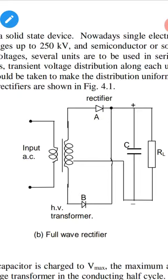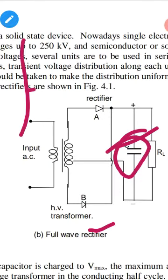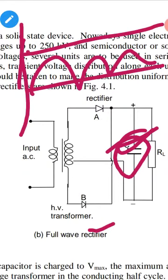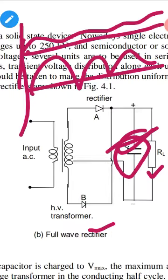Capacitors are used to smooth out voltage variations. With capacitors, we get a more rated output. For full-wave rectifiers, capacitors reduce ripple content, acting as a filter and pusher to eliminate ripple, resulting in a purer DC with less pulsation.